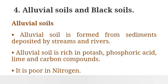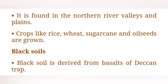Fourth distinction: Alluvial soil and Black soil. Alluvial soil is formed from sediments deposited by streams and rivers. It is rich in potassium, phosphorus, lime and carbon compounds, but poor in nitrogen. Found in the northern river valleys and plains. Crops like rice, wheat, sugarcane and oil seeds are grown.